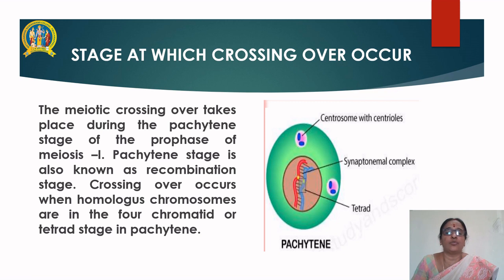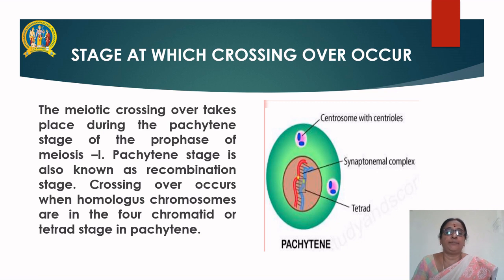Crossing over generally leads to exchange of equal segments or genes, and recombination is always reciprocal. Let us see the stage at which crossing over occurs. The meiotic crossing over takes place during the pachytene stage of the prophase of meiosis I. The pachytene stage is also known as the recombination stage.